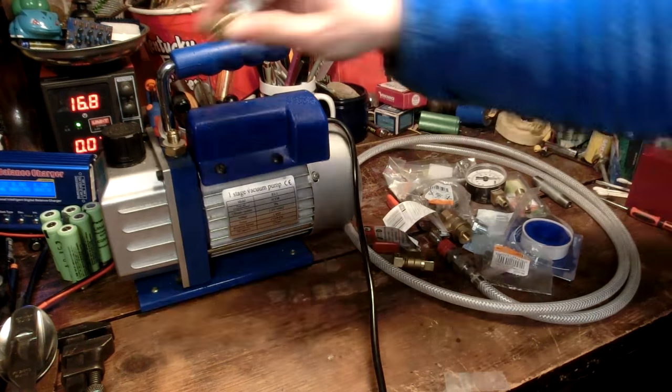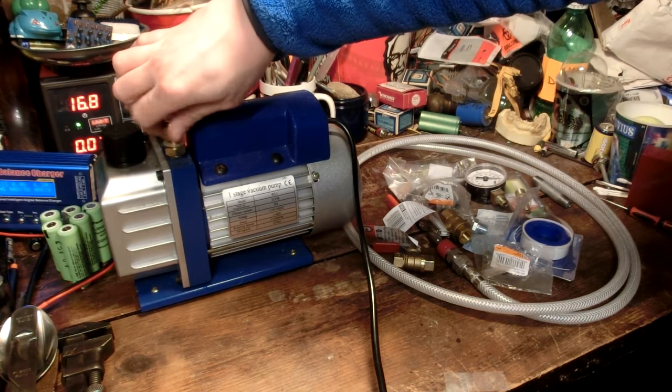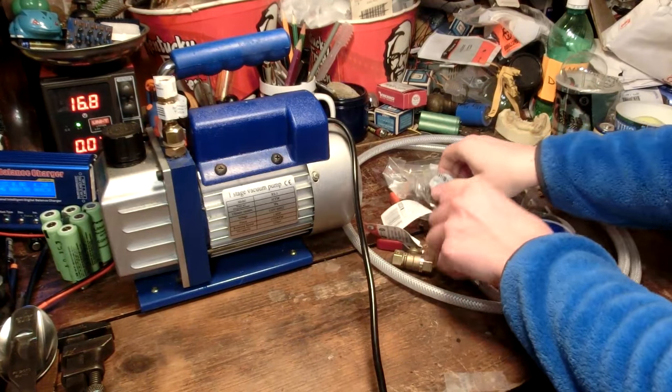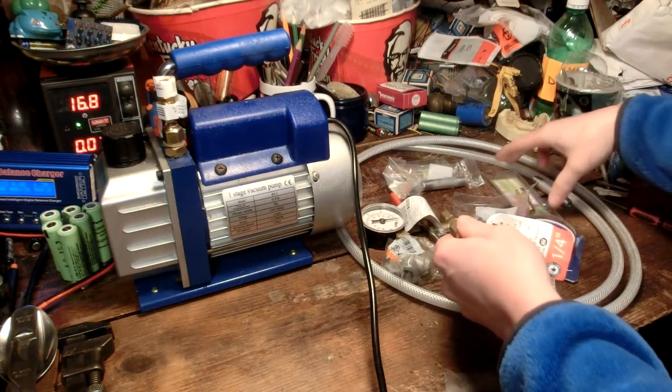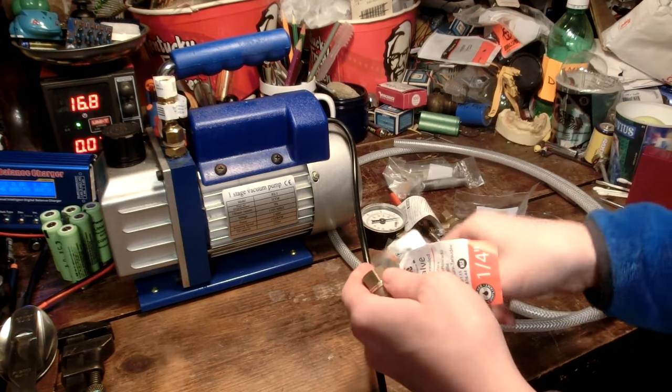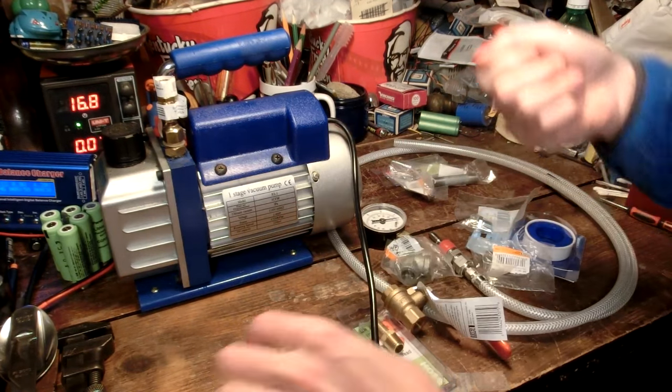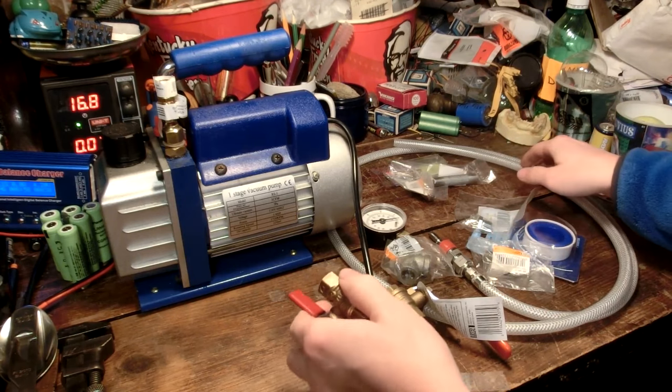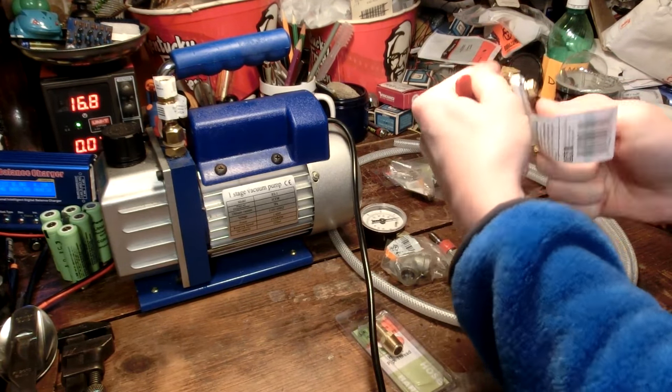Instead I've gotten several little parts that can hook onto this already existing fitting, which I think is for refrigeration purposes. I have a bunch of little things so we can have a meter and two valves, each valve having a place to connect a vacuum hose.